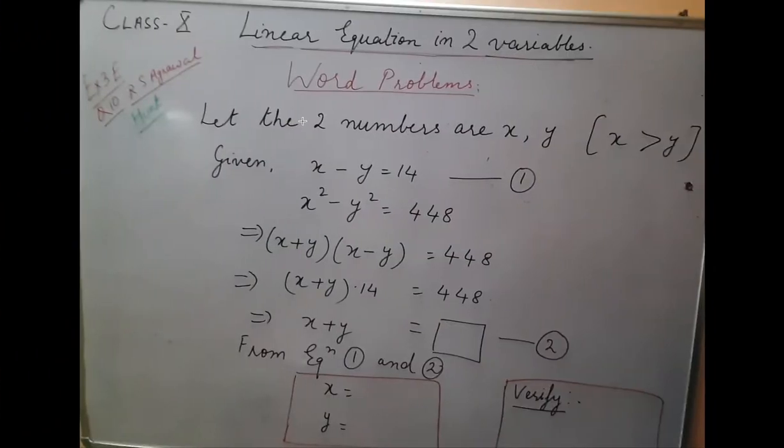The question is: the difference of two numbers is 14 and the difference of their squares is 448. So we suppose the two numbers are x and y, where x